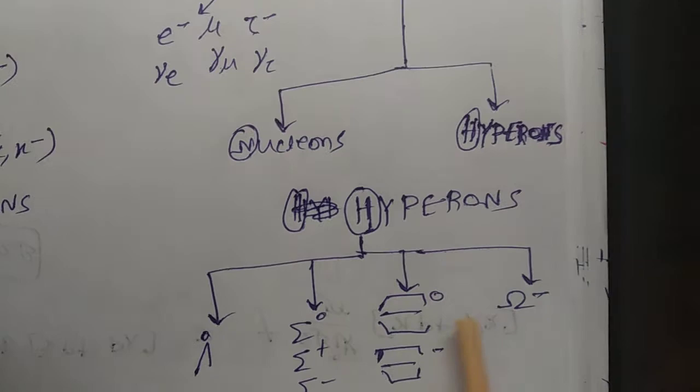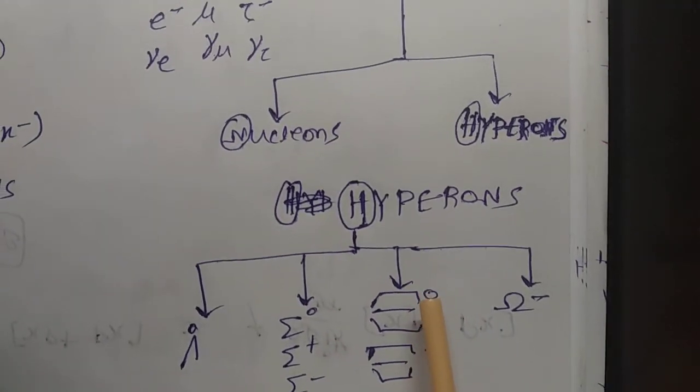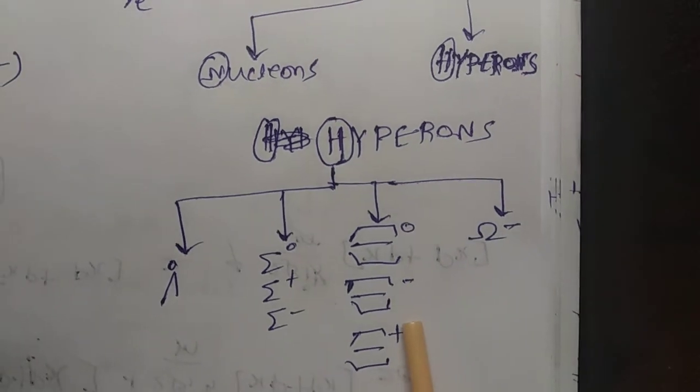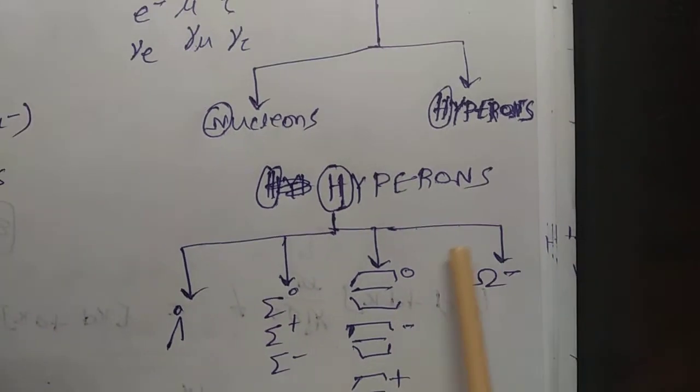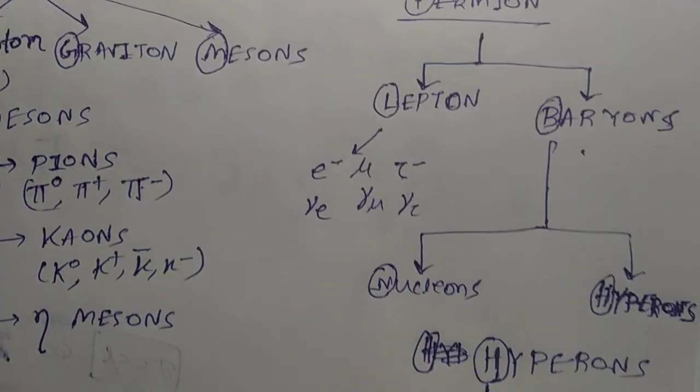What are the classifications of sigma? Sigma zero, sigma plus, sigma minus. Cascade: cascade zero, cascade minus. And omega hyperons. These are the full list of elementary particles.